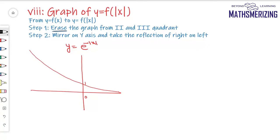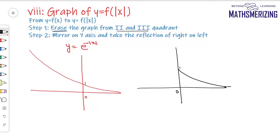First step is: erase the graph from the second and third quadrant. So I'll draw the same graph but not in the second and third quadrant. Second step is: place a mirror on the y-axis and take the reflection of the right side onto the left. So that is the graph of y = e^(-|x|).